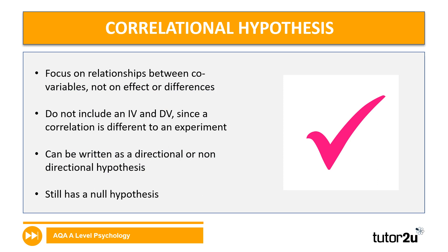A checklist for correlational hypotheses: the focus is on how two co-variables relate to each other, with no inclusion of an independent or dependent variable because a correlation is not an experiment. A correlational hypothesis can be written as directional or non-directional — if specifying direction, you'd refer to a positive or negative correlation; if non-directional, you'd simply say 'correlation'. A correlational null hypothesis is a statement of no correlation.